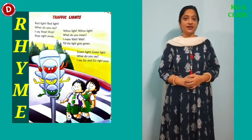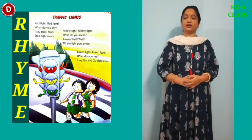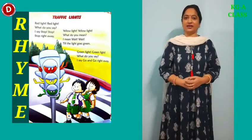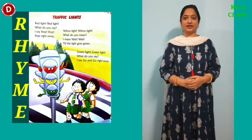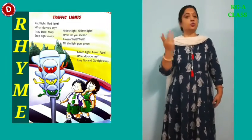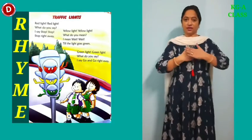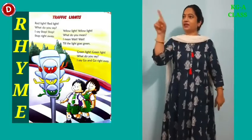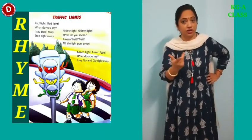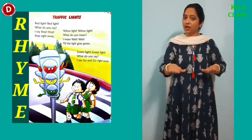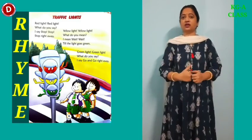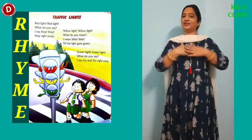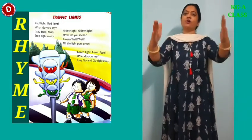Now children, we will revise the rhymes we learnt earlier — Traffic Lights and Little Jack Horner. First we will revise Traffic Lights. Red light, red light, what do you say? I say stop, stop, stop right away. Yellow light, yellow light, what do you mean? I mean wait, wait till the light goes green. Green light, green light, what do you say? I say go, go, go right away.